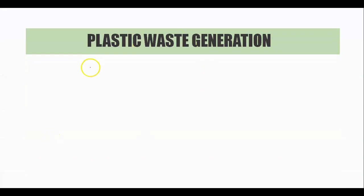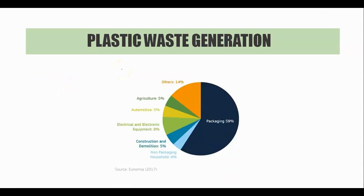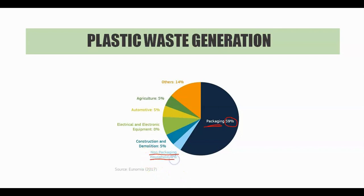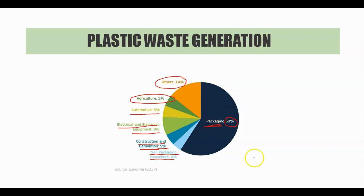Now moving on to the next part: what are the major sources of the generation of plastic waste? If you look at the sources of plastic waste generation, the major source is packaging, which constitutes about 59% of the total waste. Lots of plastic are used in packaging, followed by non-packaging household, which constitutes about 4%, 5% of construction and demolition waste, electrical and electronic equipment 8%, automotive 5%, agricultural 5%, and 14% others. So around 60% of waste is actually on packaging, and we need to focus on this and try to reduce the packaging material.